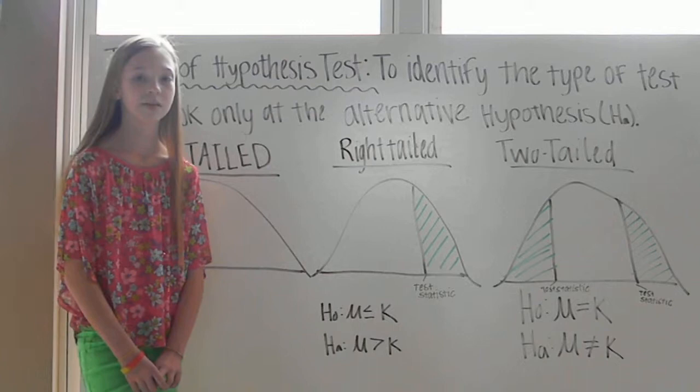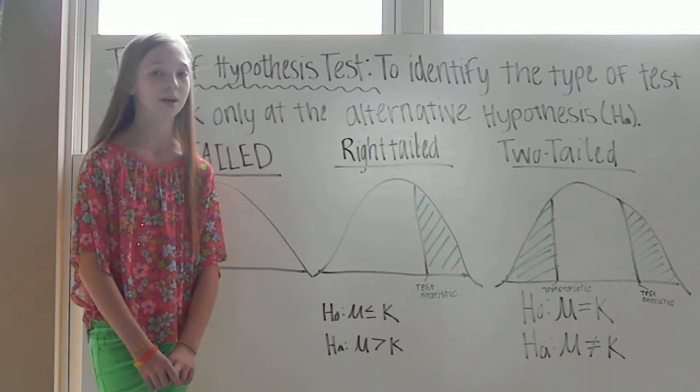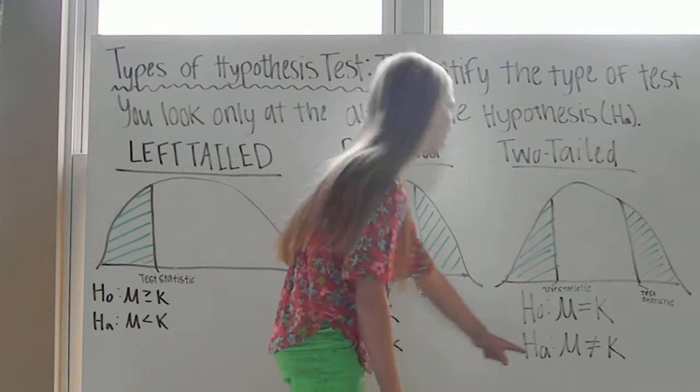When the alternative hypothesis contains the not equal to symbol, the hypothesis test is a two-tailed test. The alternative hypothesis says mu is not equal to k, so this would be a two-tailed test, each tail having an area of half p.